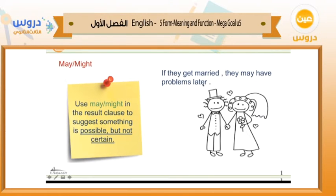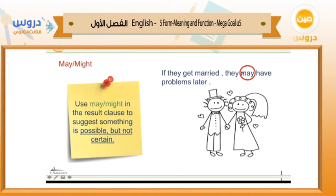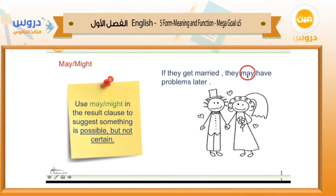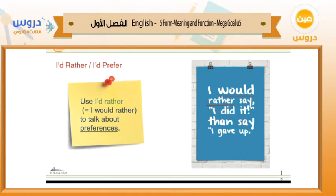Now, what about may and might? Consider: 'If they get married, they may have problems later.' This is something possible — it's possible they get married — but I'm not certain about the result. Using 'may' here means I'm not certain. This is the cause: 'if they get married.' The result is possible but uncertain: 'they may have problems.' So we use 'may' or 'might' in the result clause to suggest something is possible but not certain.